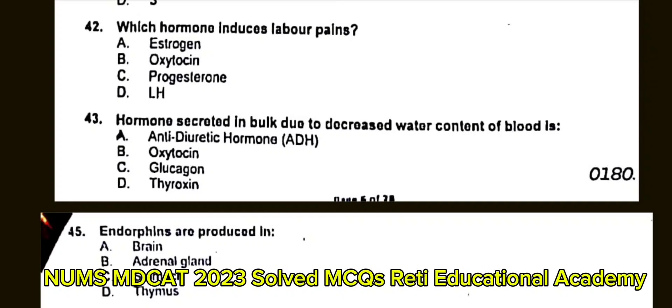Question number 44: The site of production of neurotransmitters is? A. Postsynaptic neuron. B. Presynaptic neuron. C. Synaptic cleft. D. Dendrite. The correct answer is B: Presynaptic neuron.